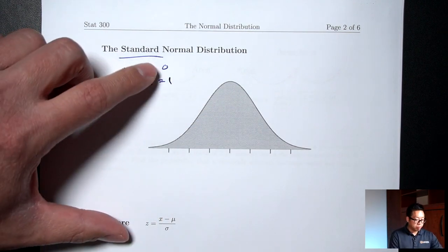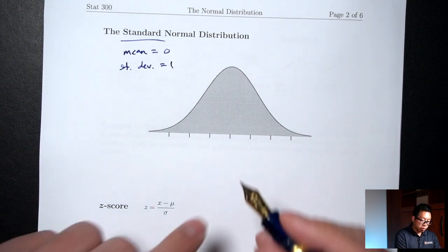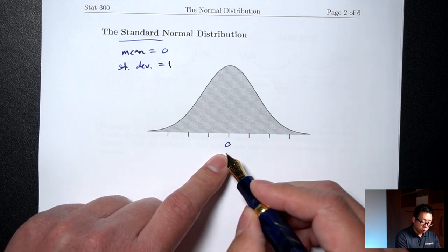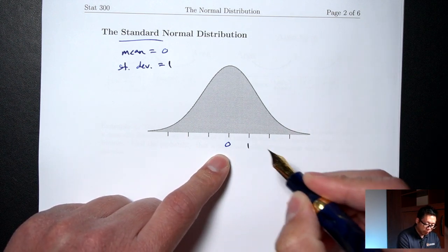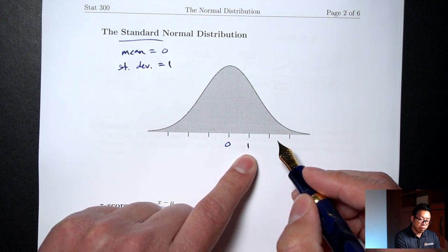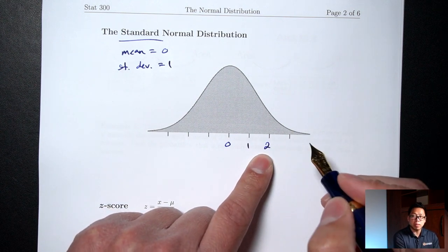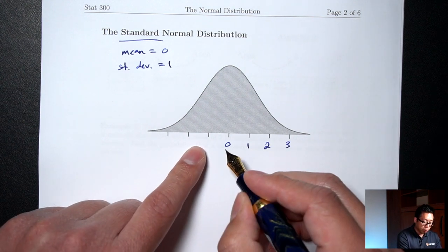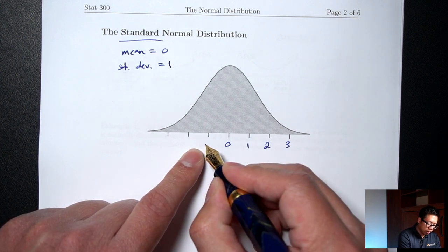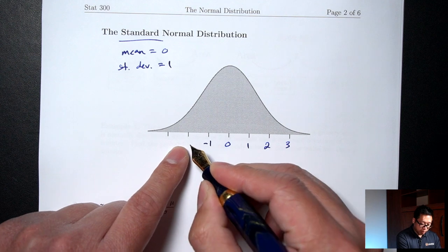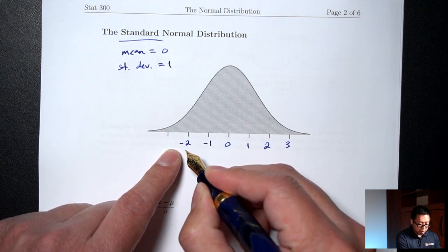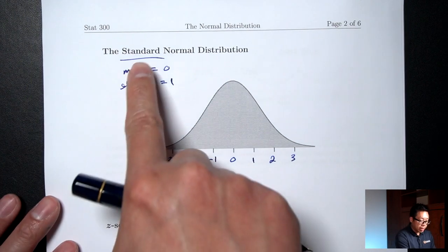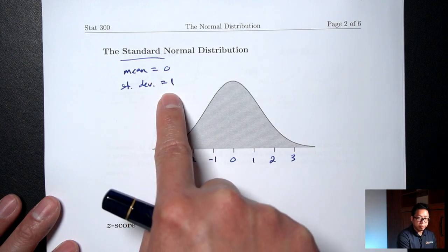Let me fill out the standard normal picture with mean zero and standard deviation one. Put the mean in the middle, then use the standard deviation to go up three times and down three times. Zero plus 1 is 1, plus 1 again is 2, plus 1 one last time is 3. Going the other direction: zero minus 1 is negative 1, minus 1 again is negative 2, minus 1 one last time is negative 3. That's the picture for the standard normal distribution where the mean is zero and standard deviation is one.